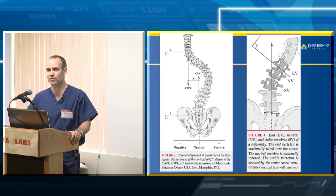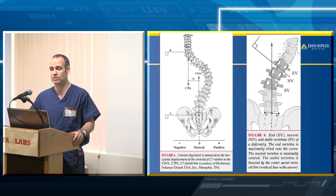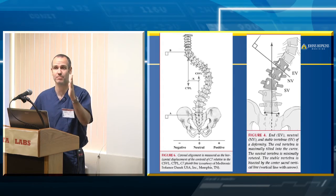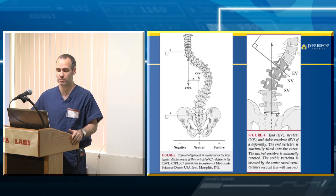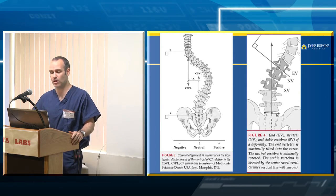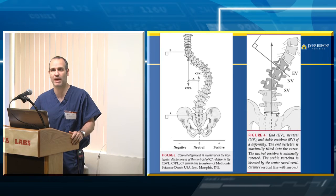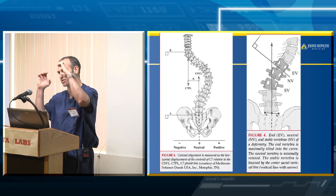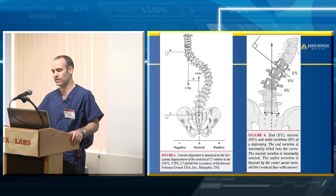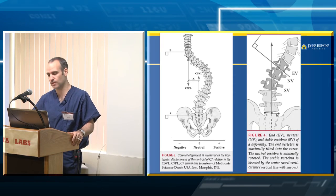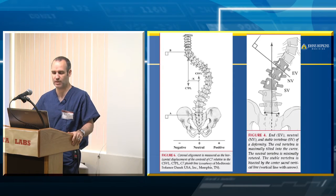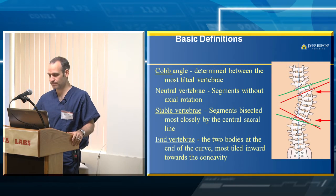You can have a patient whose central sacral vertical line and C7 plumb line line up — they are in coronal balance — but still have a big curve. The stable vertebra is when the central sacral vertical line goes through the pedicles. The neutral vertebra is when the pedicles look symmetric on AP, meaning the vertebra is not rotated. The end vertebrae are the vertebrae at the ends of the Cobb angle measurement. Your goal is to draw the biggest angle possible — that's your Cobb angle — using the most tilted end vertebrae.